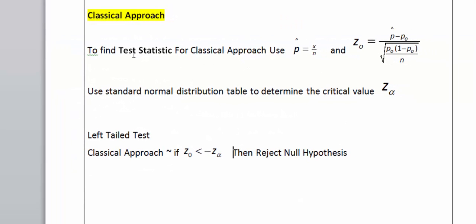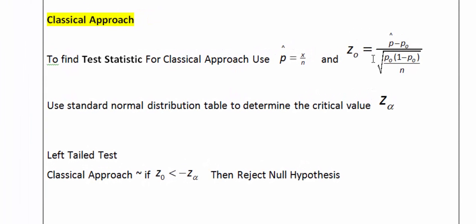We can find the test statistic by hand using these formulas. P-hat equals x over n, and z-naught equals this calculation to the right. Or we could use StatCrunch to do so as well. So let's open up StatCrunch.